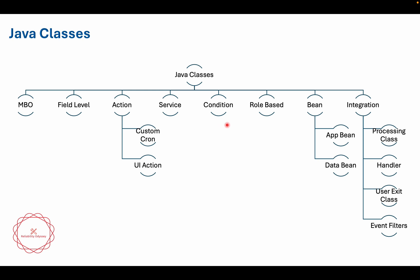The next type is conditions. You can write multiple different kinds of conditions. For example, in a workflow you can write conditions to validate whether the workflow should go on a positive line or a negative line, and you can associate condition classes there.